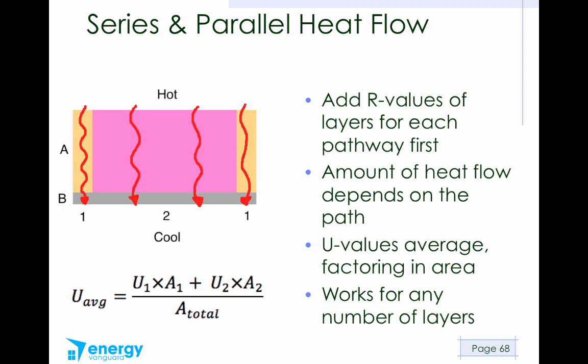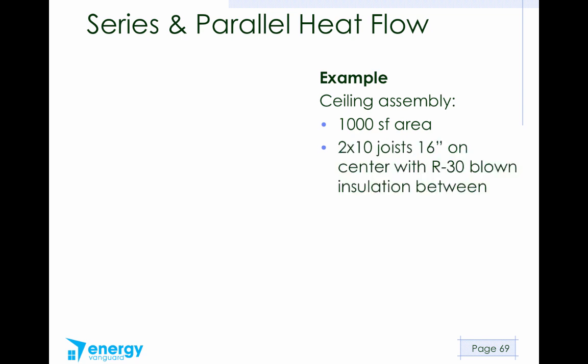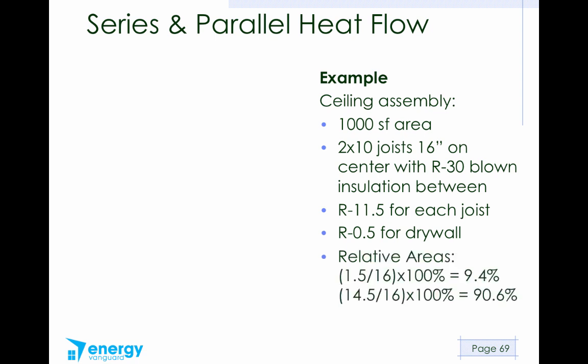Let's look at an example. This is a ceiling assembly, and we've got 1,000 square feet of area. We've got 2 by 10 joists, 16 inches on center, with R30 blown insulation in between. Each joist has an R value of 11.5. And then the bottom layer, the drywall, is an R value of 0.5.